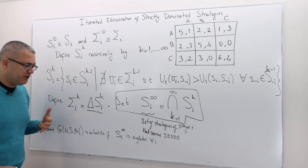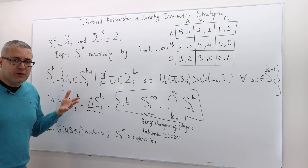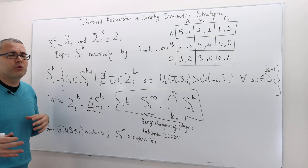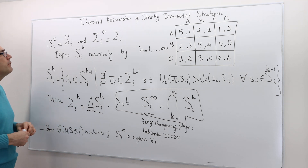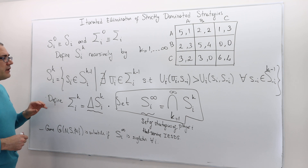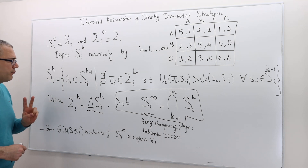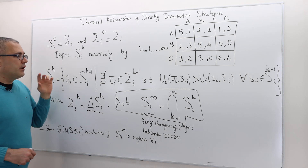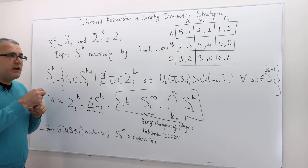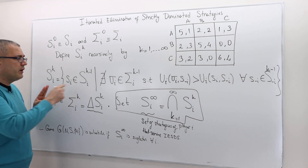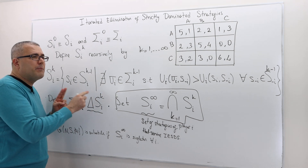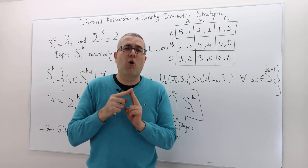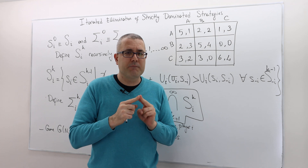The remaining surviving strategy profile is going to be the outcome of this game. Two things are very important when looking at surviving strategies: one, it must have survived the previous stage, and two, it shouldn't be a dominated strategy given that opponents' strategies also survived stage K minus one.